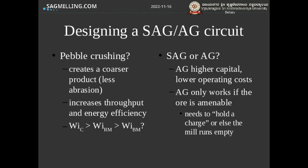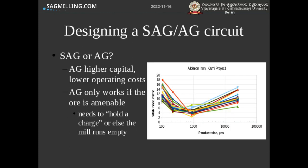The choice of SAG mill versus AG mill usually comes down to two points: the split between capital and operating costs (AG mill has higher capital cost but lower operating costs), and whether the ore is amenable to autogenous milling — meaning the mill will hold a charge and not run empty. An AG-amenable ore from an iron project shows a crushing work index that is higher than the rod mill work index, meaning the mill will contain a charge of grinding media. If you see a low crushing work index less than the rod mill work index, the coarse material will all break, leaving an empty mill unable to grind ore autogenously.